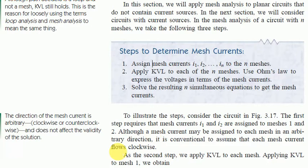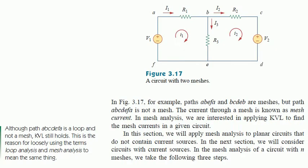Looking at the circuit, mesh 1 is assigned current I1 and mesh 2 is assigned current I2, both in the clockwise direction. We assign the two mesh currents I1 and I2, and then we apply KVL to each mesh.